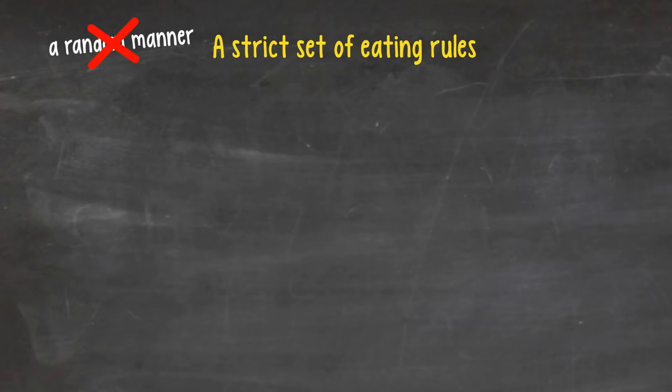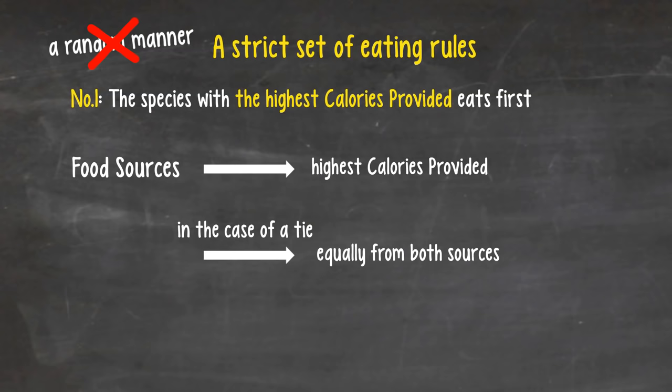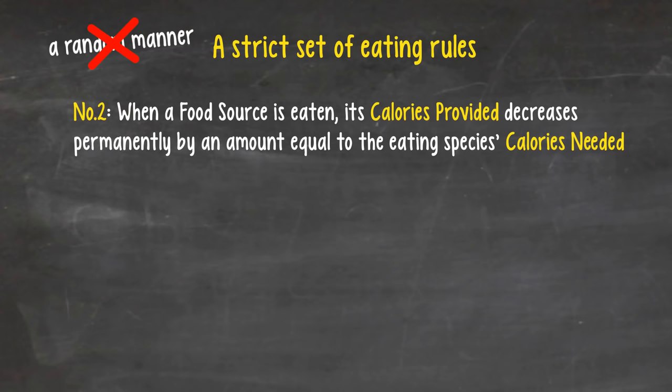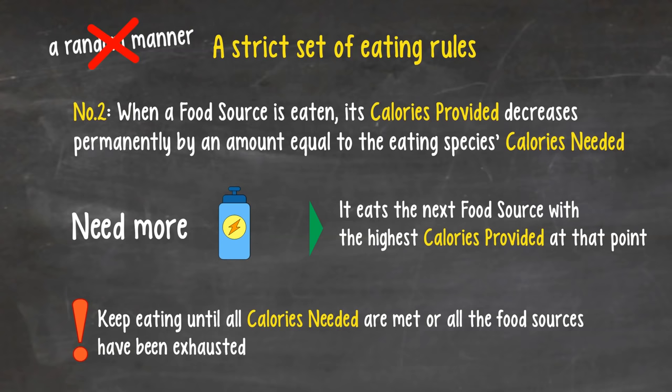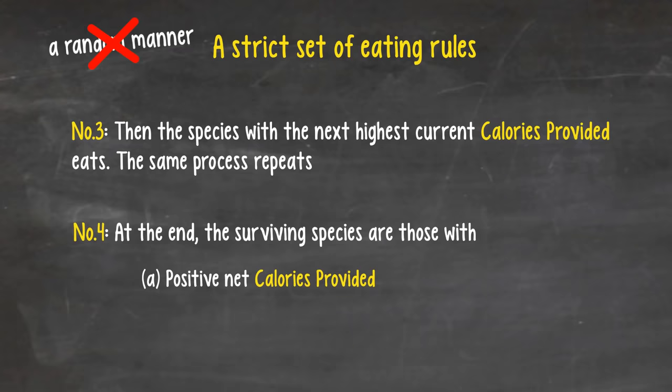We'll walk you through an example right after, and everything will make sense. Number one, the species with the highest calories provided eats first. It eats its food source with the highest calories provided. In the case of a tie, it eats equally from both sources. Number two, when a food source is eaten, its calories provided decreases permanently by an amount equal to the eating species' calories needed. If the eating species needs more calories, it eats the next food source with the highest calories provided at that point. It will keep eating until all calories needed are met, or all the food sources have been exhausted. Number three, then the species with the next highest current calories provided eats. The same process repeats itself. Number four, at the end when all species have eaten, the surviving species are those with positive net calories provided and calories needed fully met.